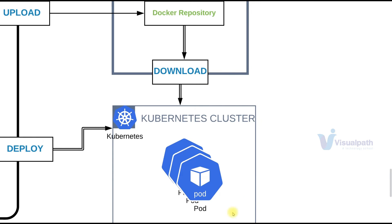The Helm chart deployment will create everything for us — pods running through deployments, services, secrets, volumes — everything through Helm charts. If those resources already exist, it will only implement the changes, like a new image tag for an application pod.